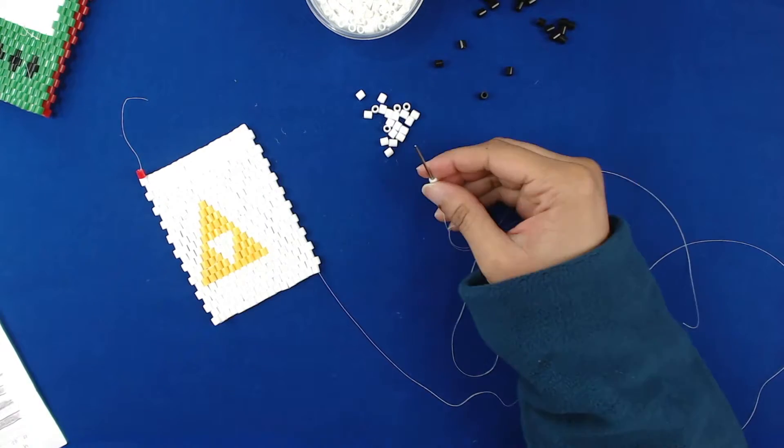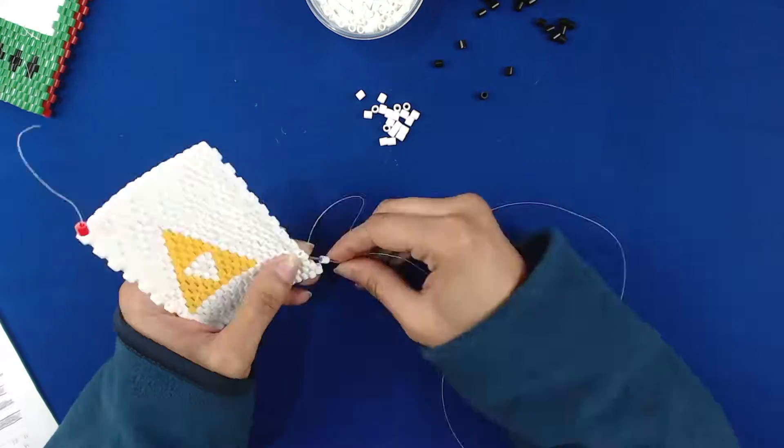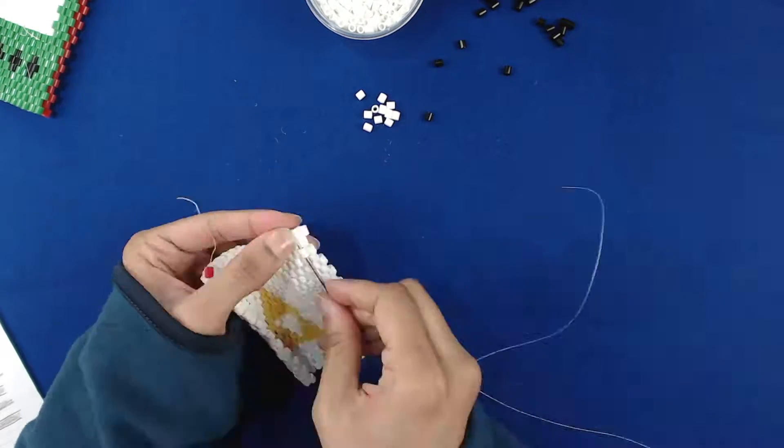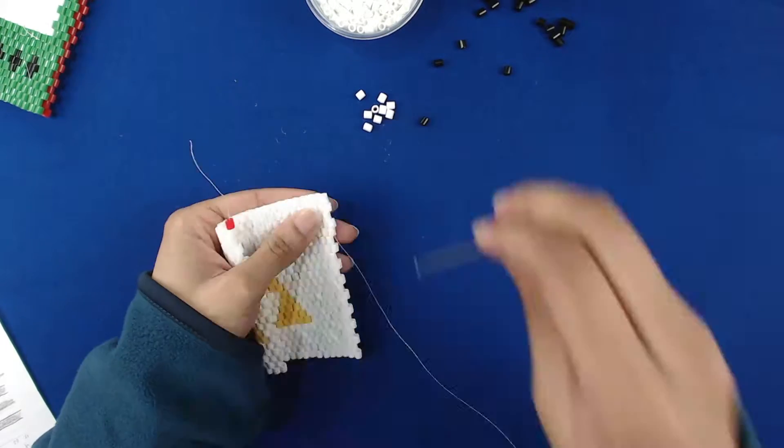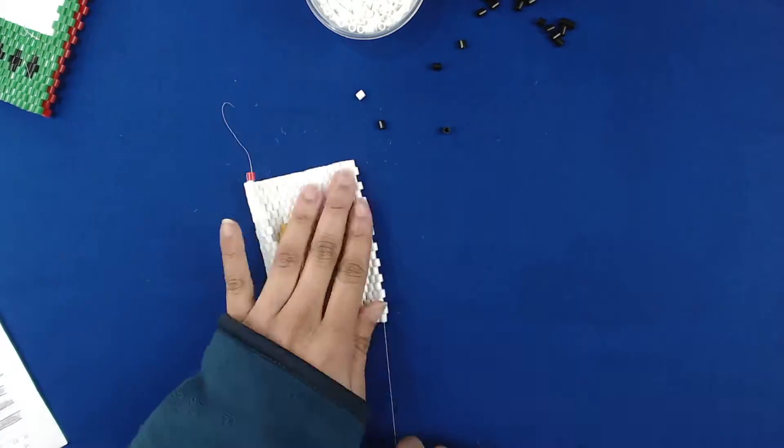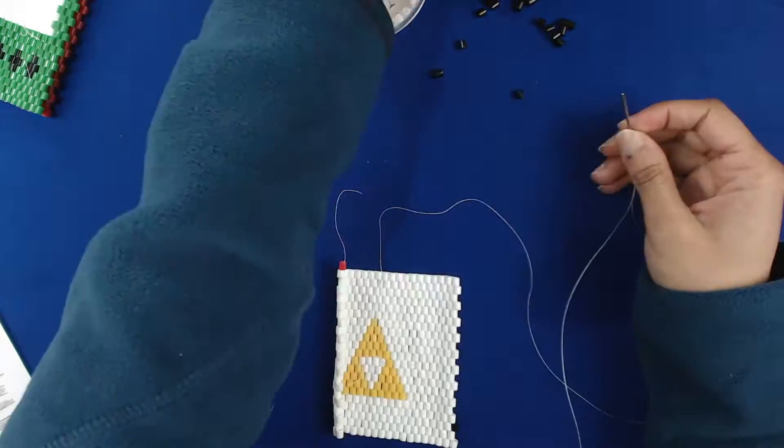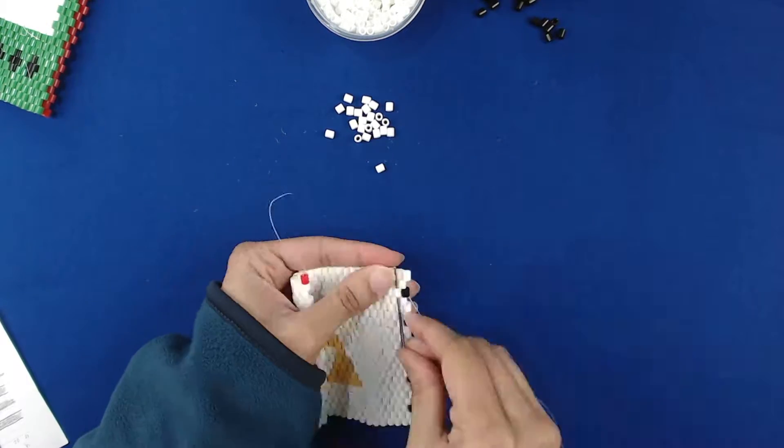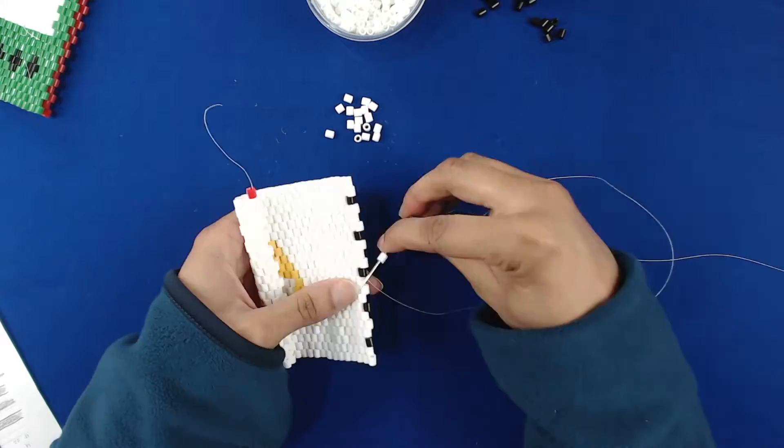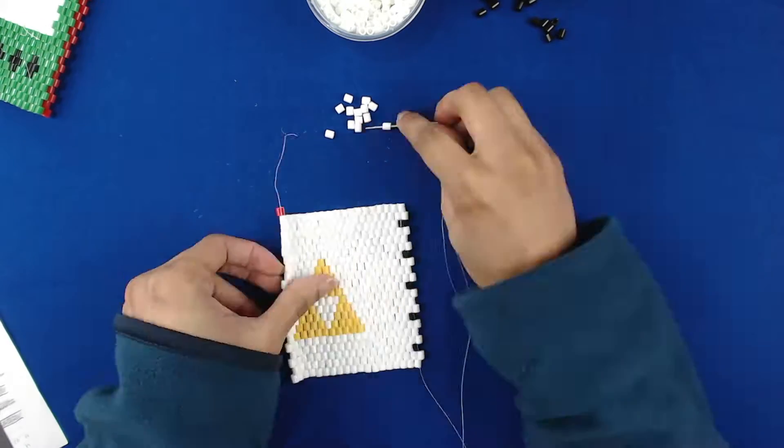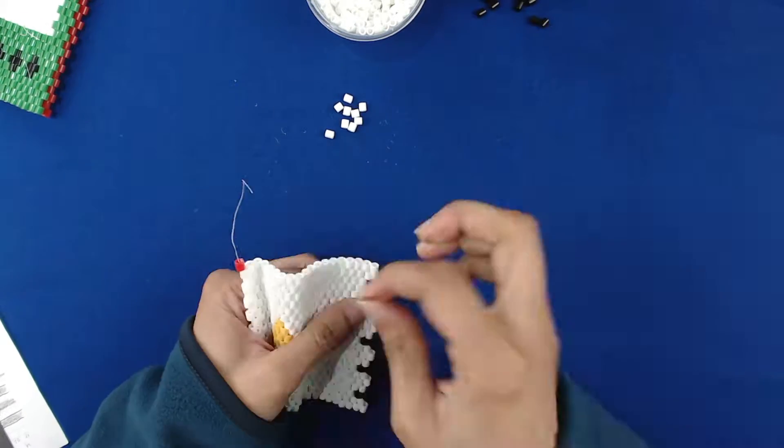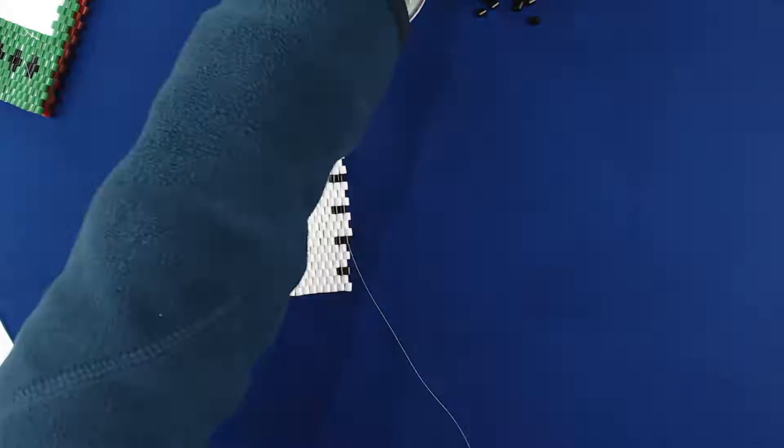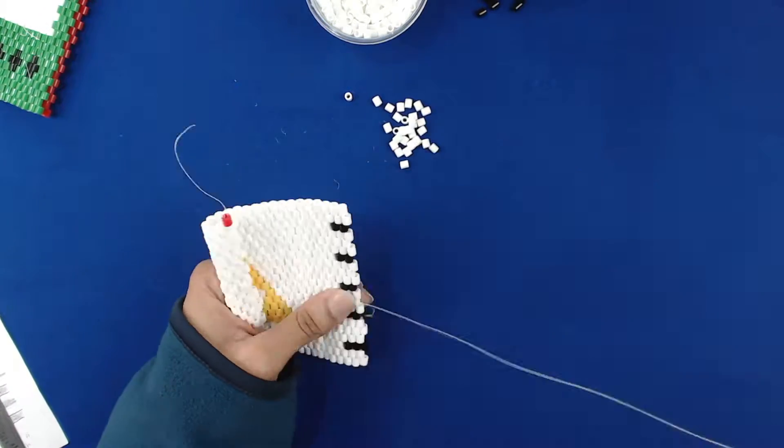But there is proof that it was actually used long, long before that. Peyote Stitch is an off-loom stitch, as you can see, and there are many types, such as the Even Count, the Odd Count, which is what I'm using here, Tubular and Flat Round.